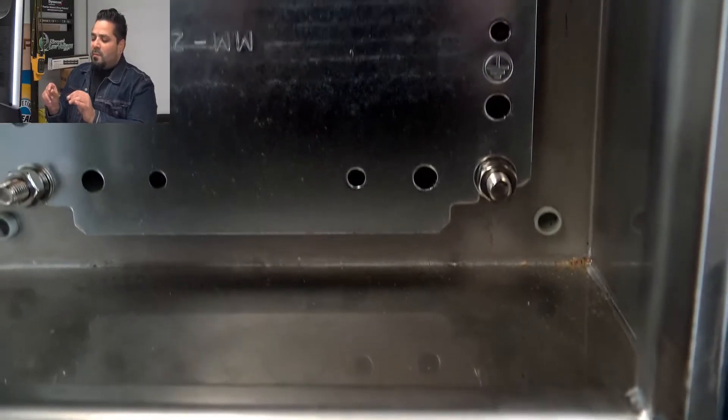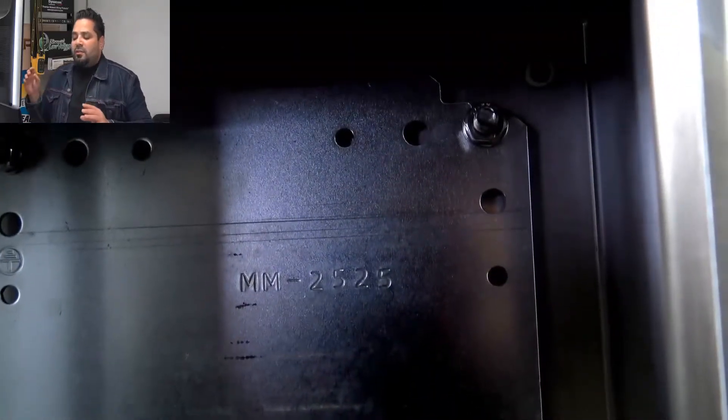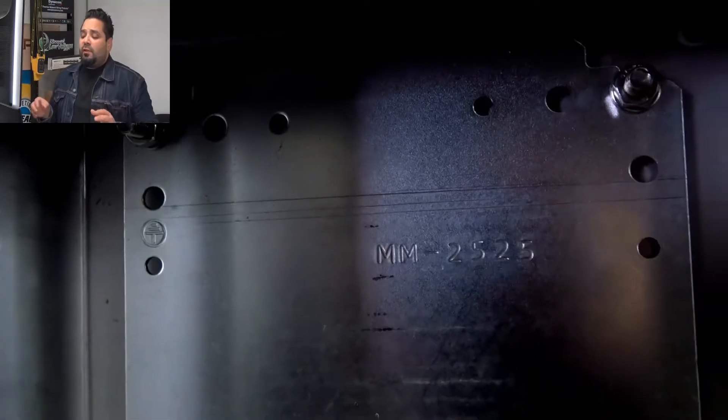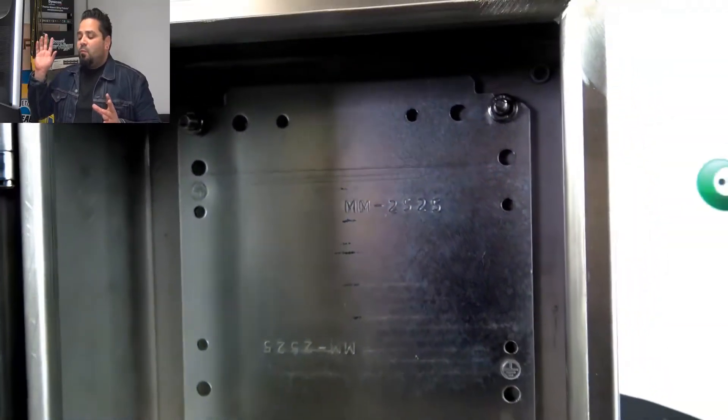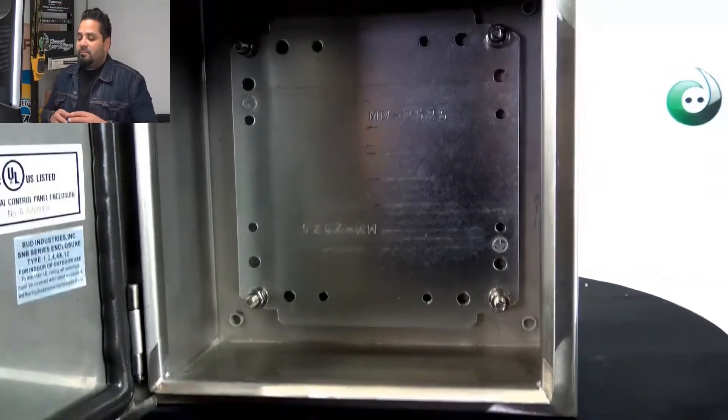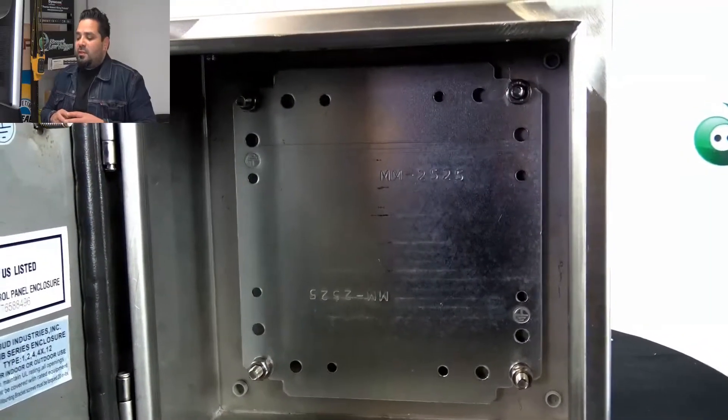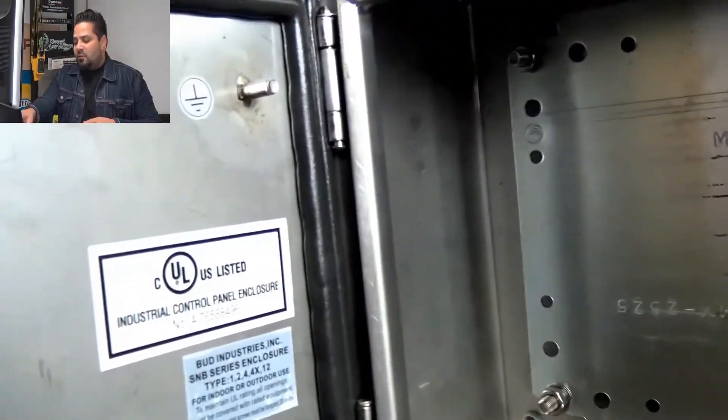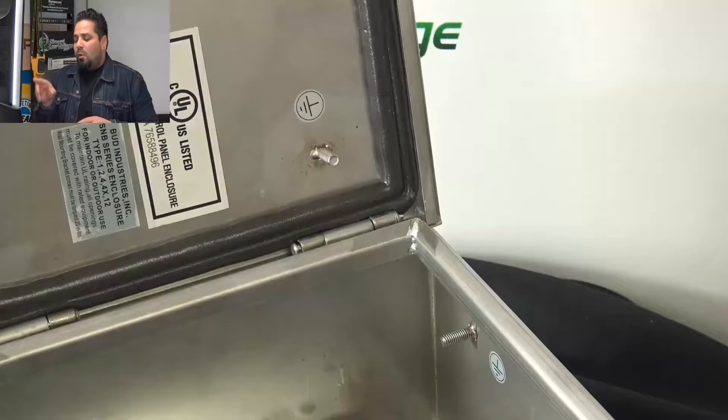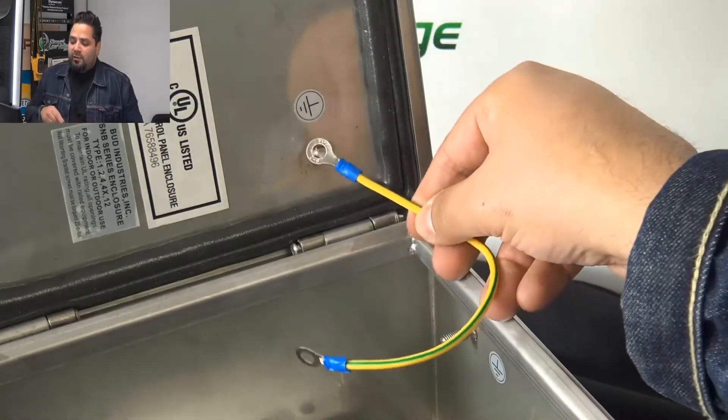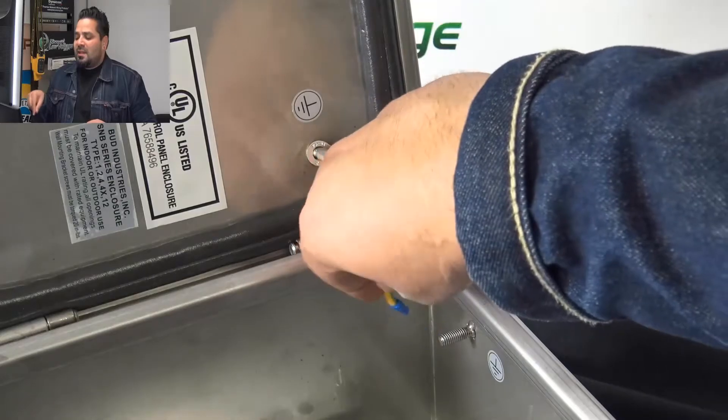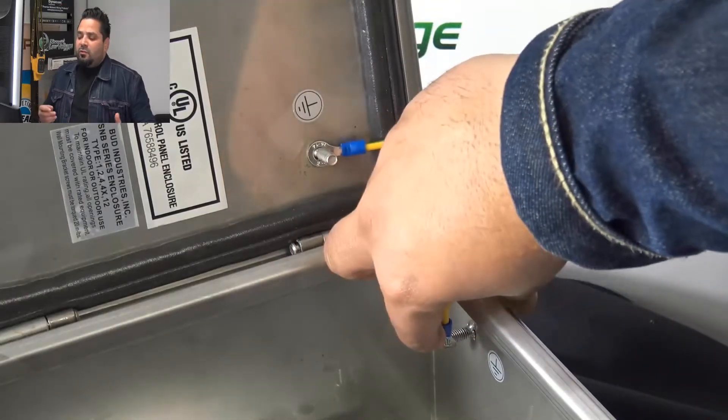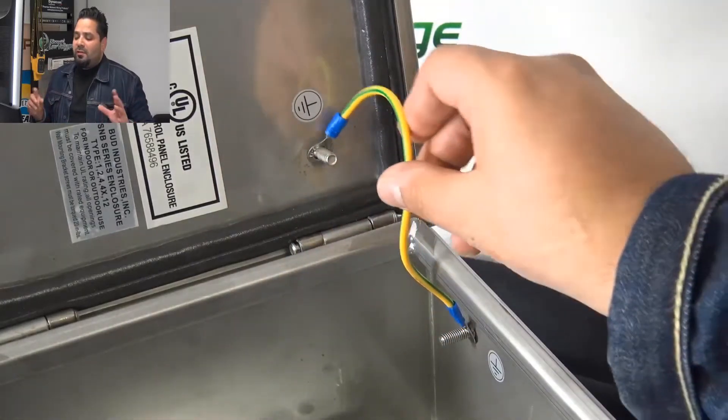Now this enclosure, these enclosures, they all include a wall mounting kit. And then what else is included is a little grounding—see that on the door there's that little bolt right there—it does include a little grounding strap so you can go ahead and tighten it down on the inside and on the door, and it includes of course the washer and the nuts.